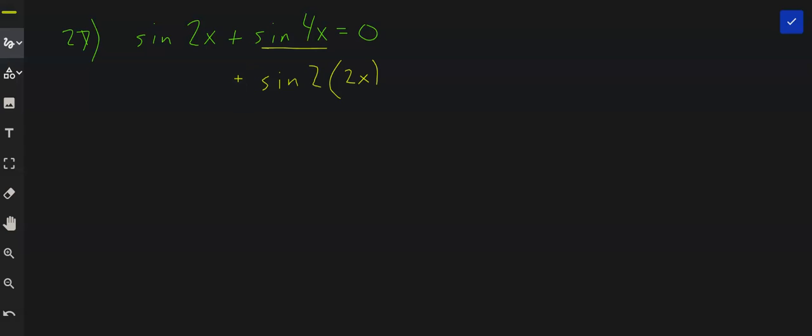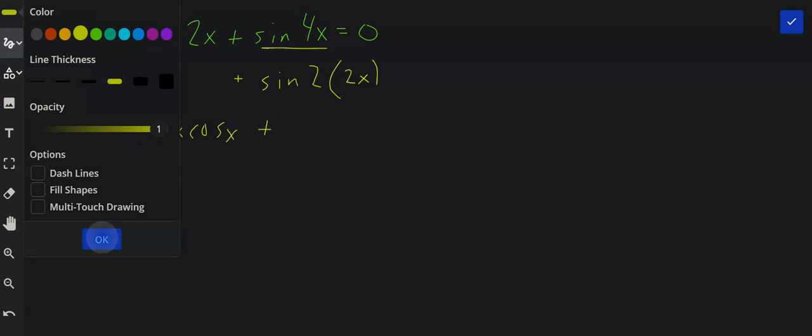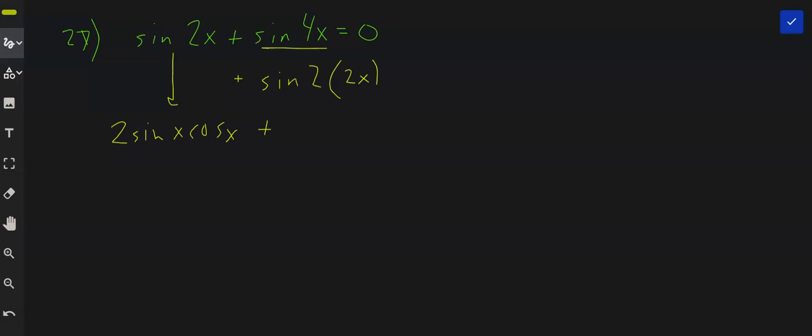You know, you and I both know that to replace sine 2x, it's 2 sine x cosine x. But on this next one, I'm going to have 2 sine 2x cosine 2x. In other words, the x got replaced with 2x.